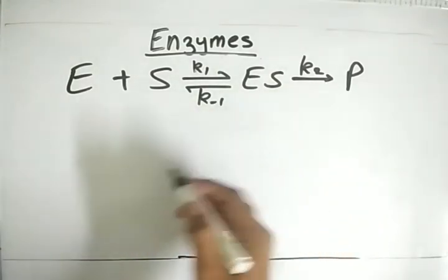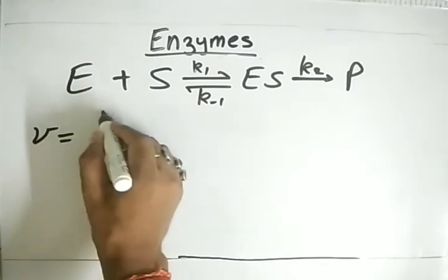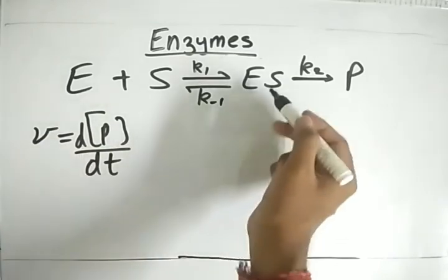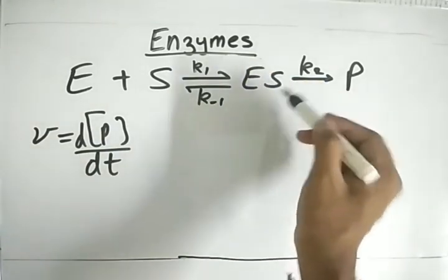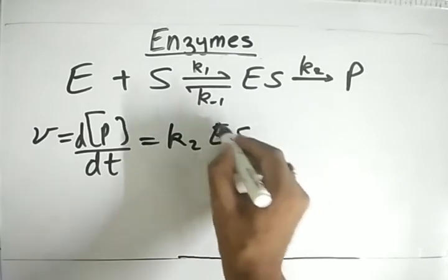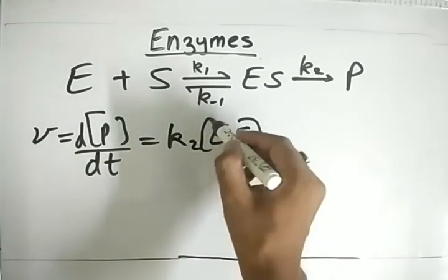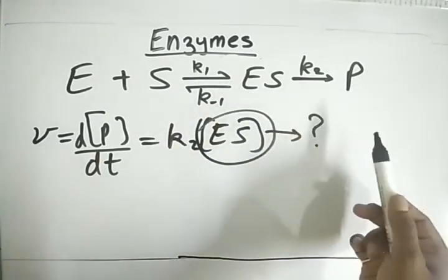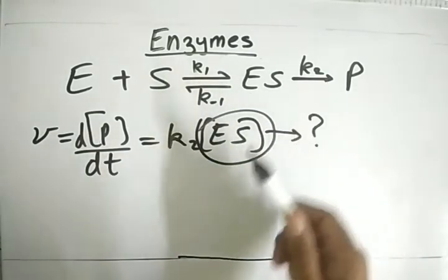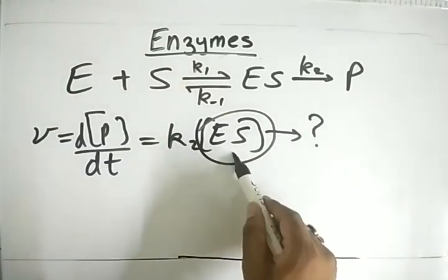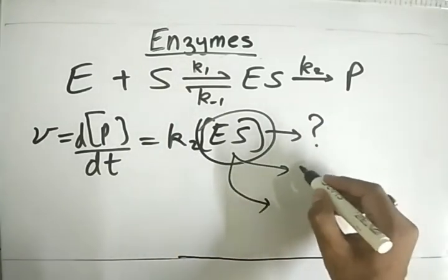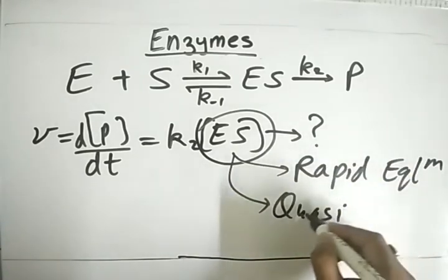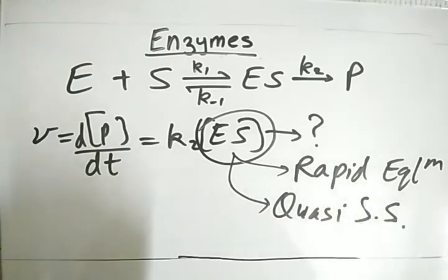Now let's discuss how the reaction rate and product formation are determined. V, the rate of product formation (dP/dt), equals k2 times the ES concentration. The problem is we cannot directly measure ES. There are two methods to find ES: the rapid equilibrium approach and the quasi steady state approach.